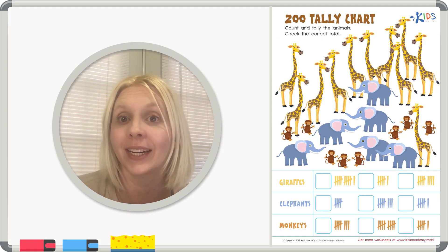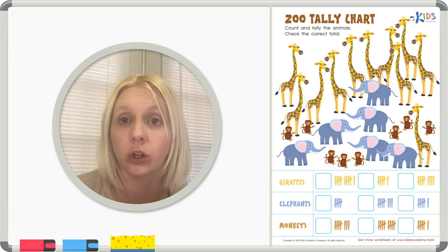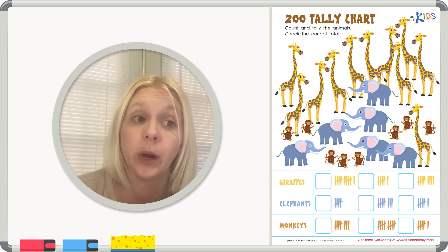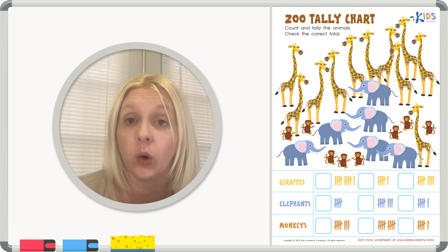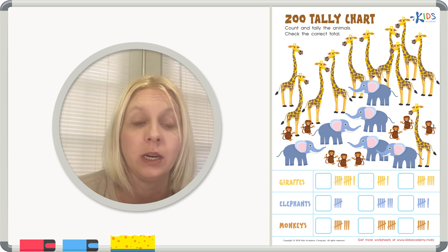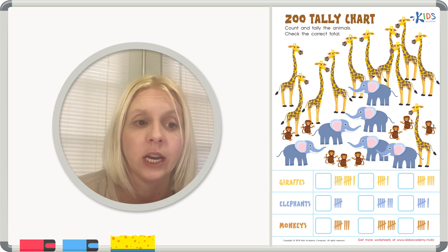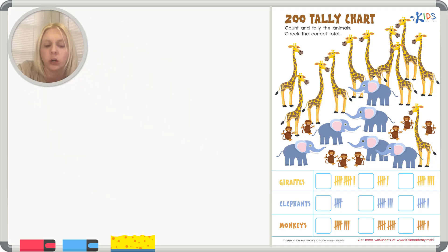Hello, welcome back! Today we have a new worksheet called 'Zoo Tally Chart.' I want to talk about why we're doing this. We're using a system called tally marks, which helps us organize data or information. Information can be numbers, objects, people, or ideas. Today we're going to be organizing information about animals.